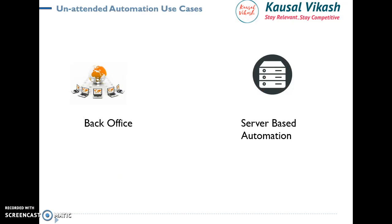Unattended Bots are mostly used in back office operations or service-based automation where no human interaction is required. For example, if a human has to collect data from different sources in the morning at 9 o'clock and send it to different stakeholders, that entire process can be automated and deployed in the server room. Similarly, processes scheduled to collect data from different stock exchanges every morning are purely unattended automation.